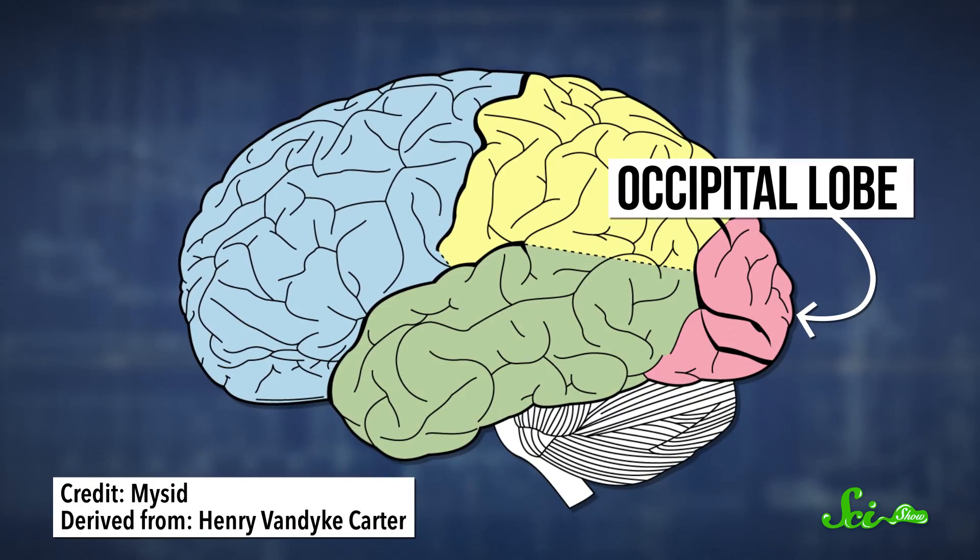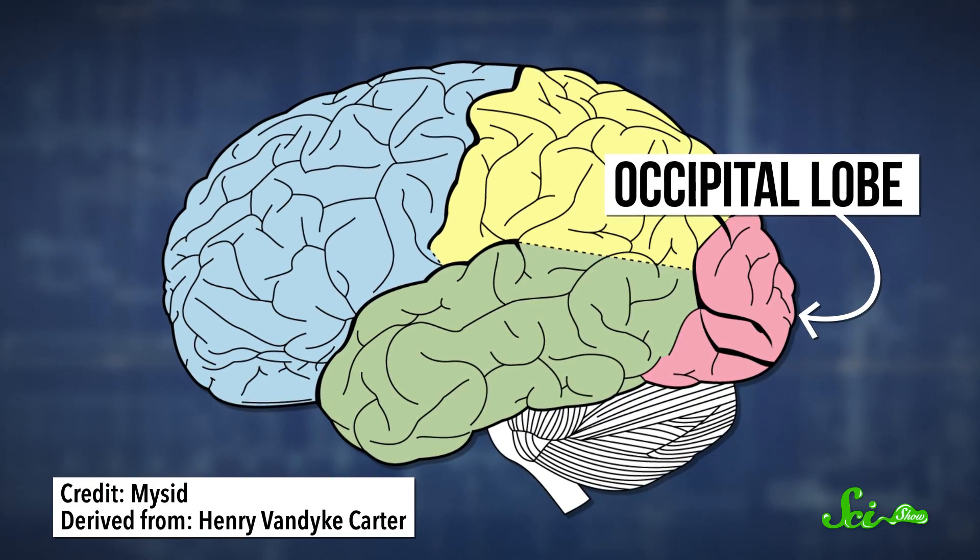That causes your ganglion cells to misfire random signals, and you see those little dots and flashes. And if you hit your head really hard and see stars, that is because you bumped it hard enough to mess with your occipital lobe, the part of your brain that does visual processing.